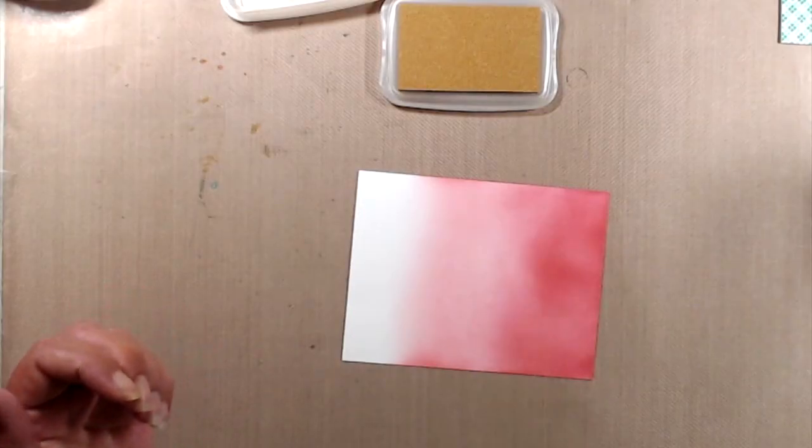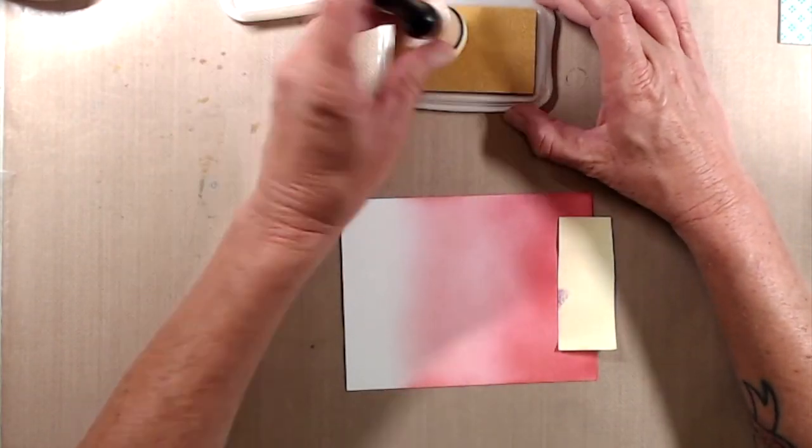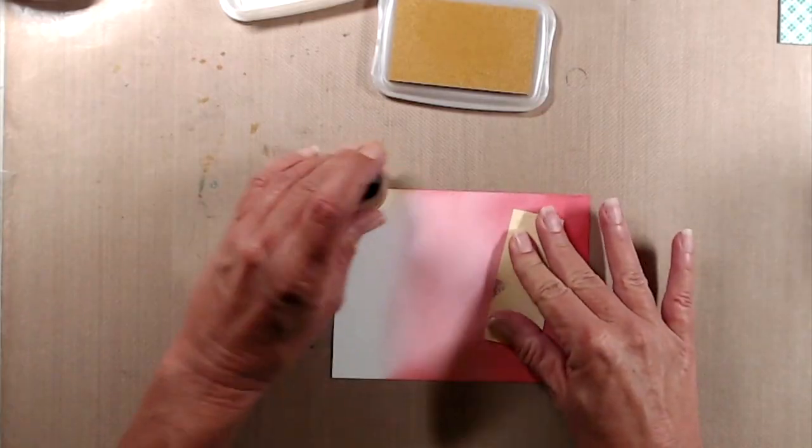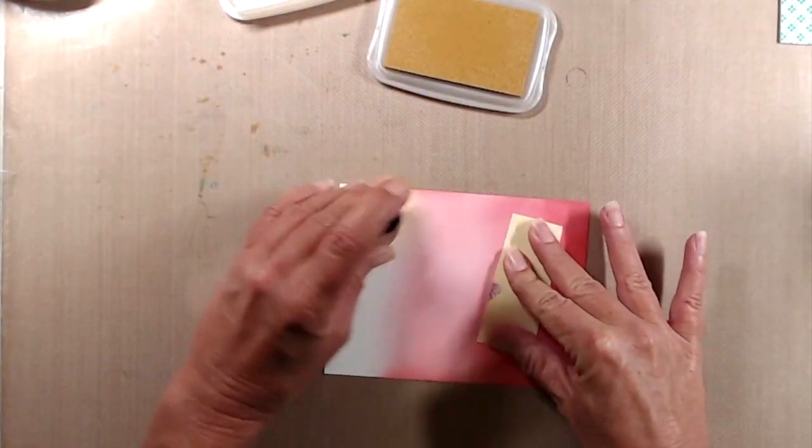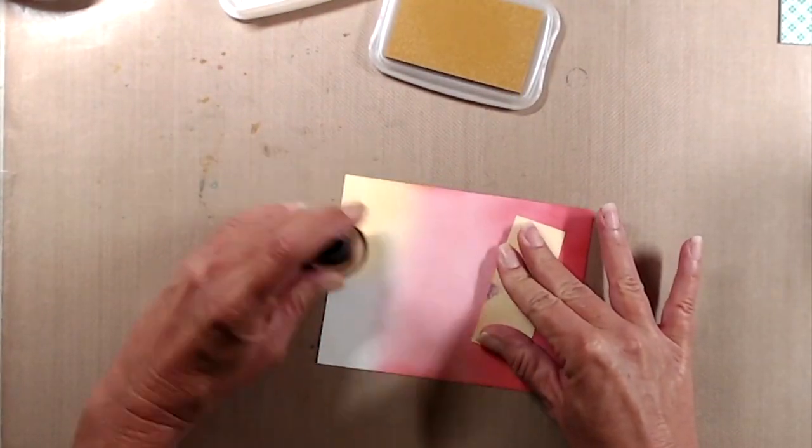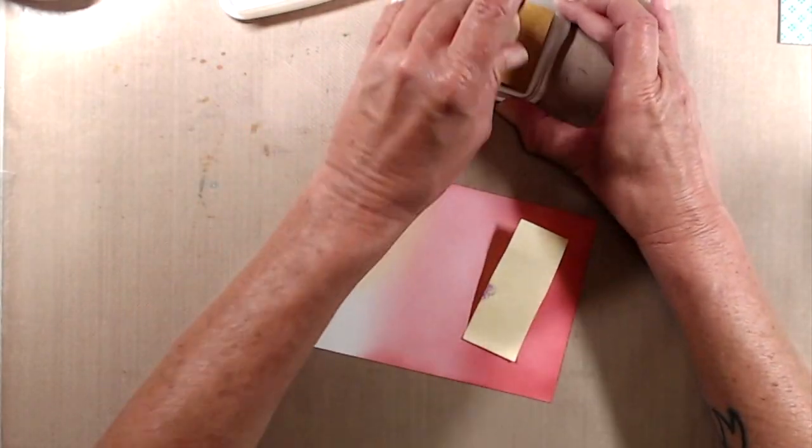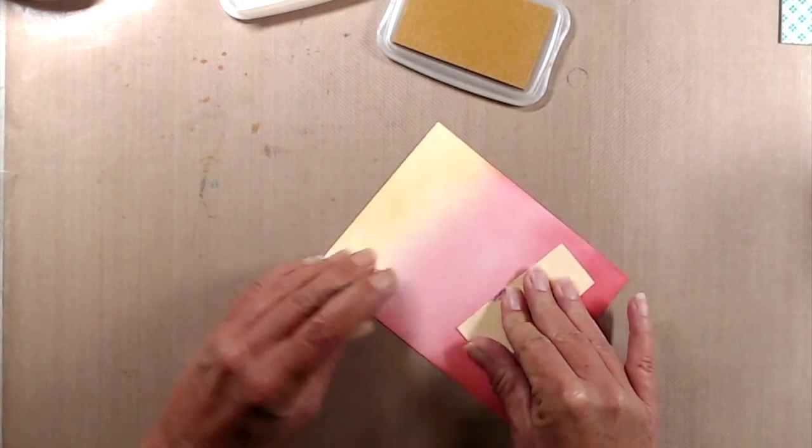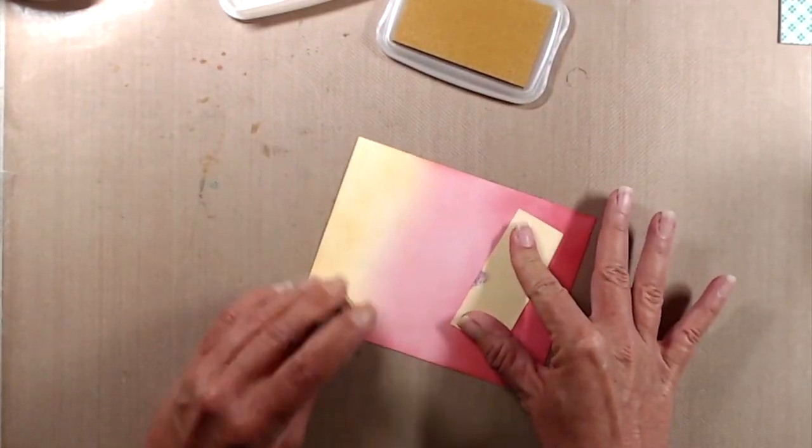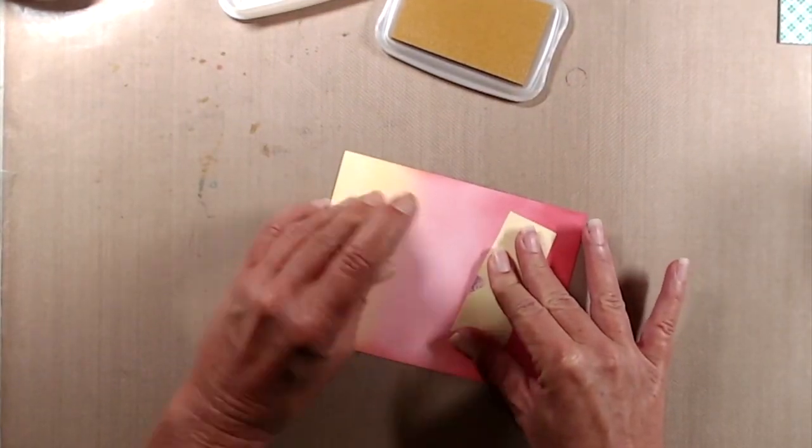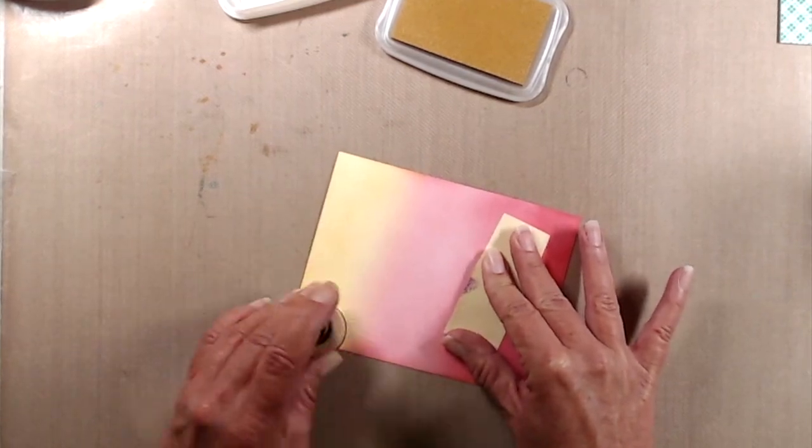Once I had the pink inks blended, I used Gold Galaxy Brilliance ink to add some shimmer to the very bottom of that card panel. Since the Brilliance ink is a pigment ink, I decided to use a mini ink blending tool instead of a makeup brush, just so I could go in with a heavier hand and get more coverage a little bit faster.